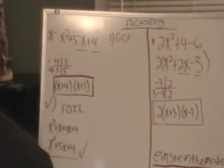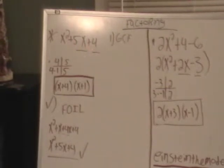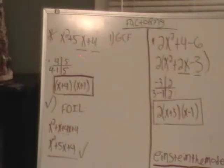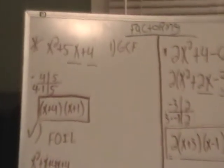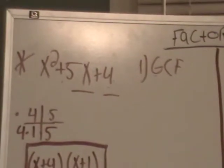So take a look at this diagram. I have x squared plus 5x plus 4. Now the first thing that we always look at when we're factoring is, is there a greatest common factor, or GCF, that we can take out of this.